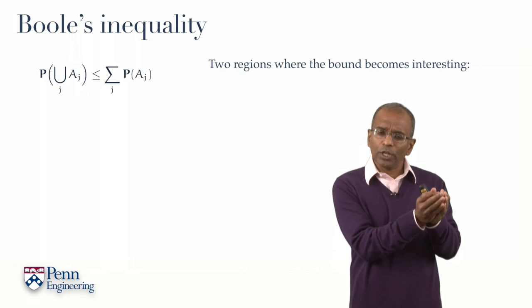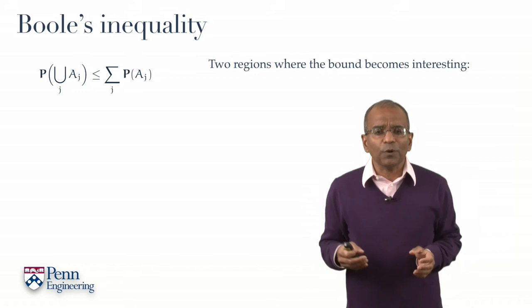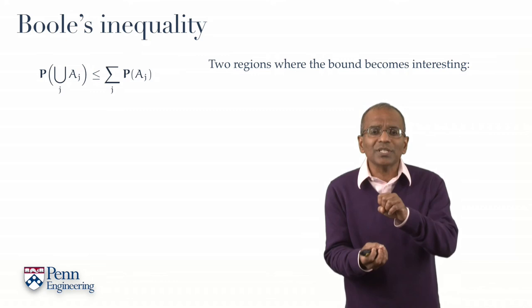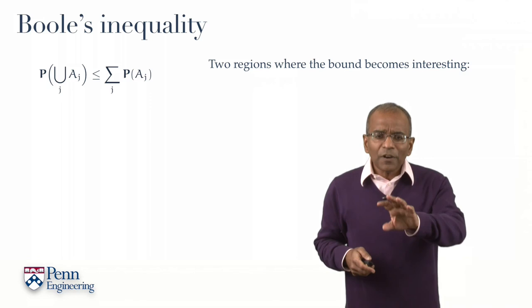But let's take a good hard look at the bound and say, I have an inequality, I have a right-hand side, where is it likely to be useful? And I'm going to now focus, zoom in, on two regions where this bound becomes strangely interesting.